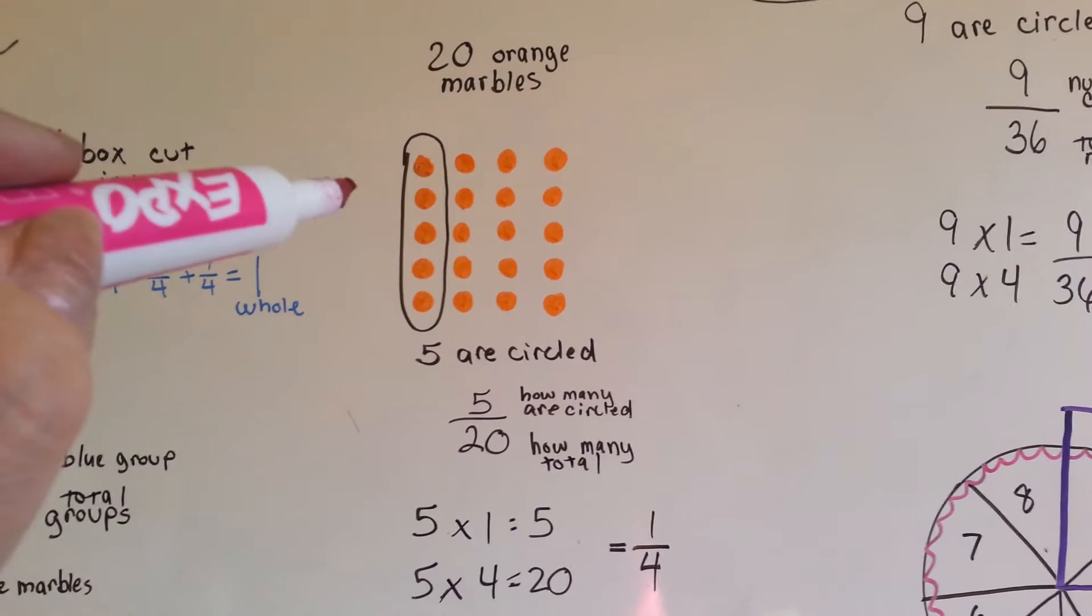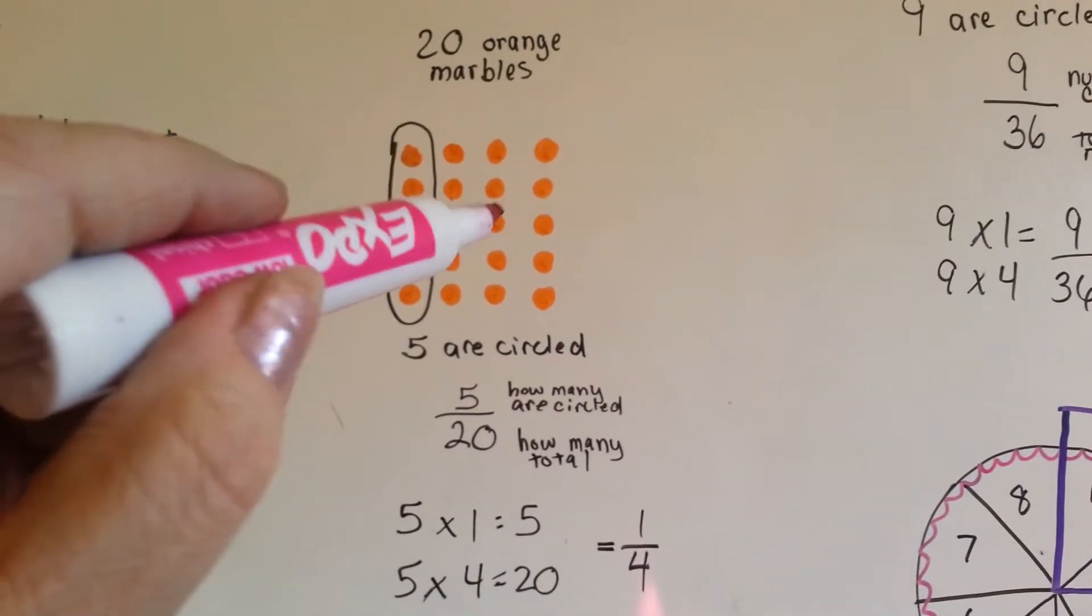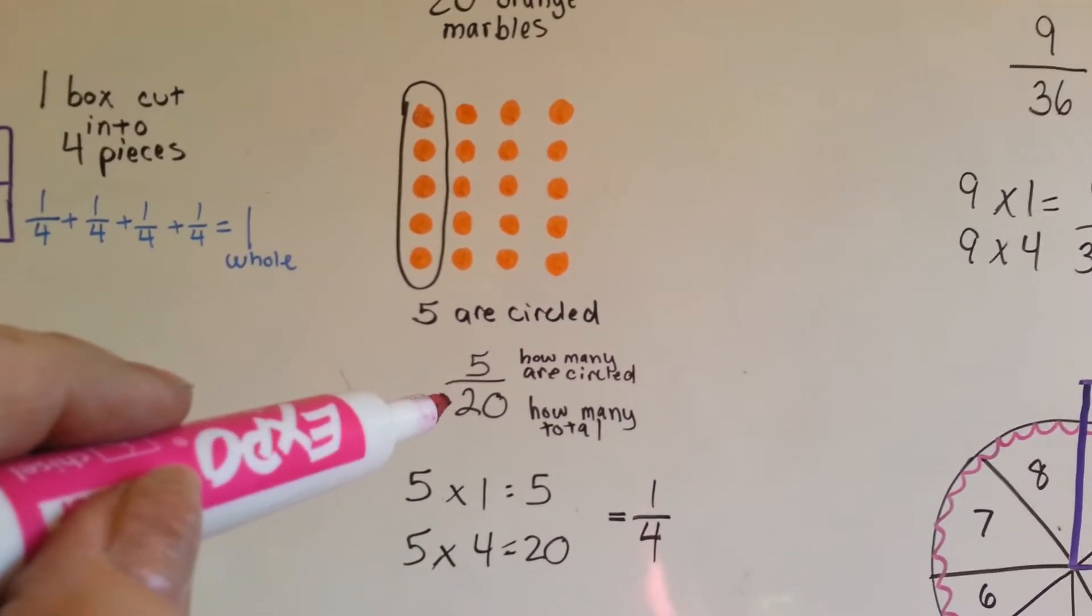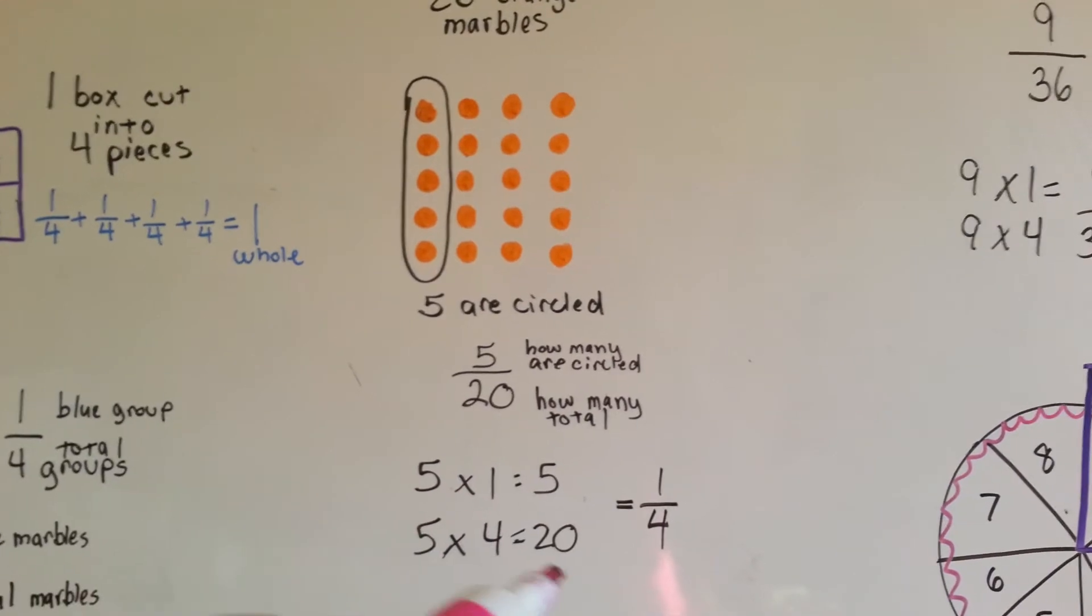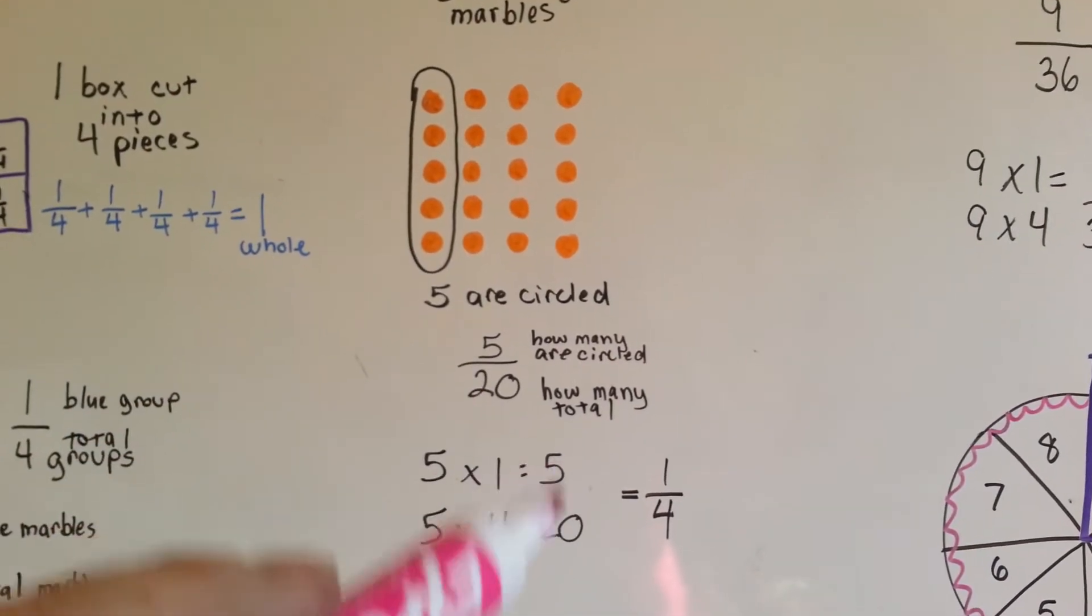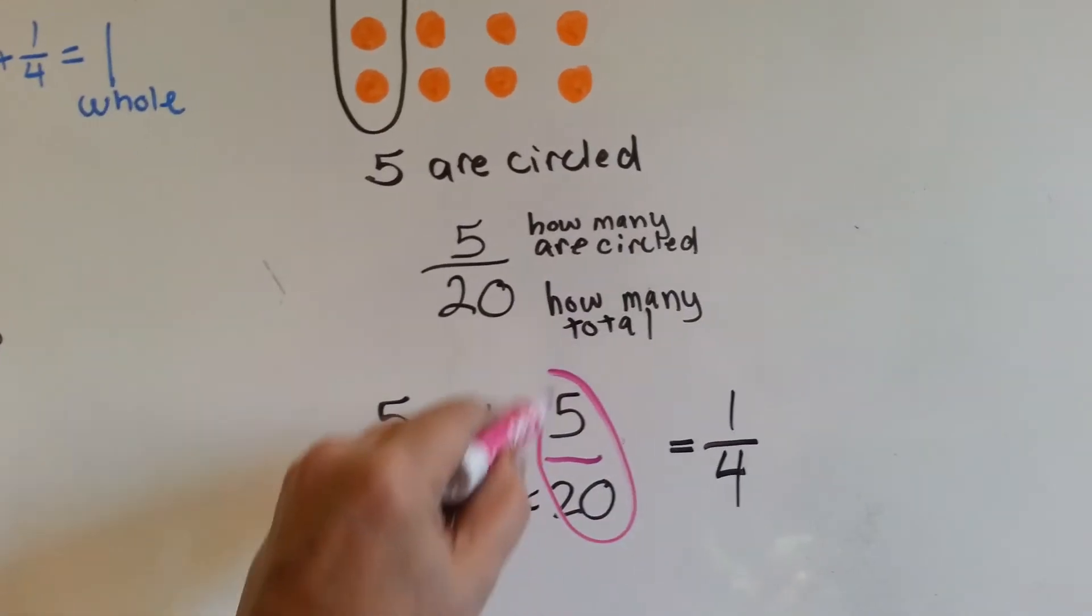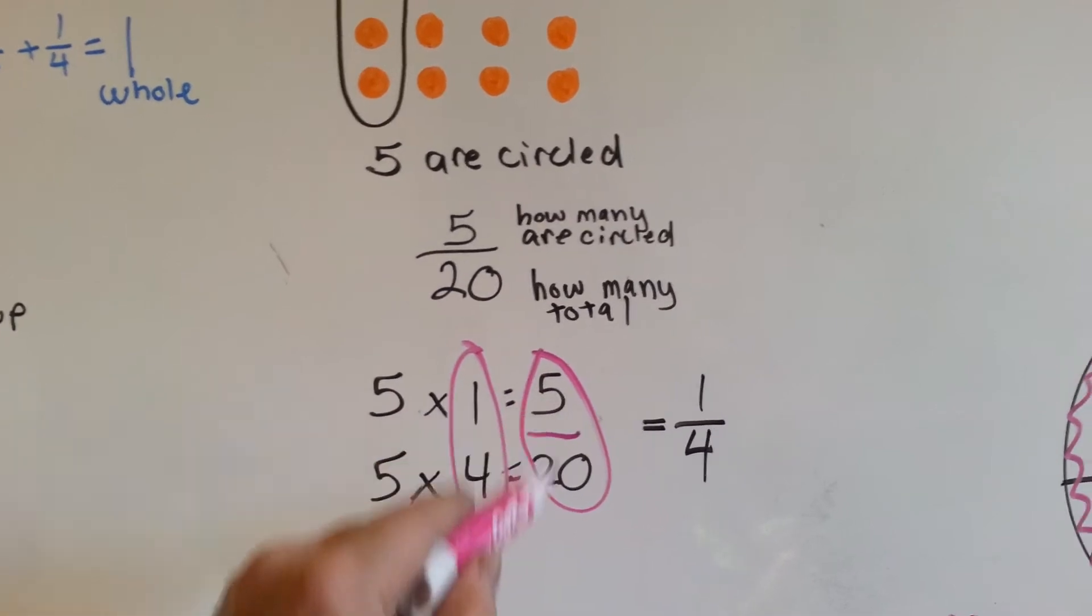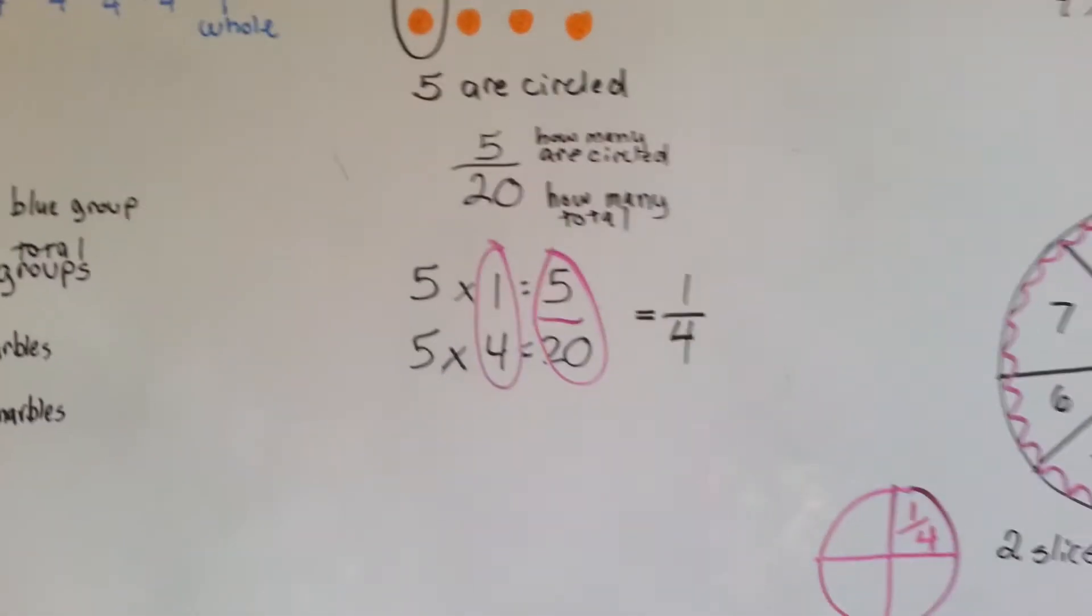Let's take a look at this one. We've got twenty orange marbles, and five are circled. Five of the twenty are circled. Five-twentieths are circled. Five times one is five. Five times four is twenty. Five-twentieths. So here's our five-twentieths, and here's our one-fourth. It's how many times five can go into that five and that twenty. One-fourth.